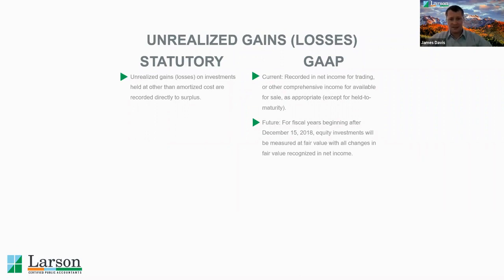As far as unrealized gains are concerned, unrealized gains or losses under statutory accounting are recorded directly to surplus for any investments that are held at other than amortized cost. Under GAAP, unrealized gains and losses are recorded in net income for trading securities, or other comprehensive income for available for sale.